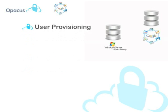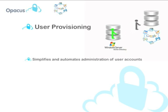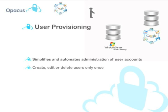The Opicus solution simplifies and automates the administration of user accounts. The user account is managed by the local administrator and, whenever a change is made, the change is propagated to Google Apps. If, for instance, a new user account is created, edited, or deleted in the local user store, Opicus will create, edit, or delete the same account in Google Apps.